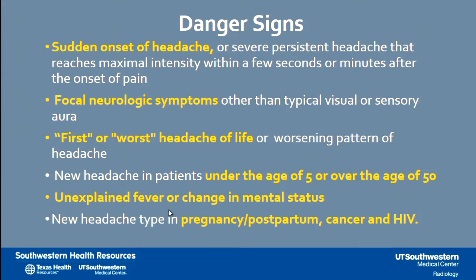People who get the first or worst headache of their life — a thunderclap-type syndrome — you may be worried about subarachnoid hemorrhage; those are people you may consider sending to the ER. Demographics play a role here as well: the prevalence of headaches is much lower in the very young and the older, so new onset headaches in those populations generally have a higher yield of lesion detection. If patients have fever or change in mental status, maybe you're worried about meningitis, abscess, or encephalitis. Systemic processes like pregnancy, cancer, or immunocompromise also increase the yield of imaging.